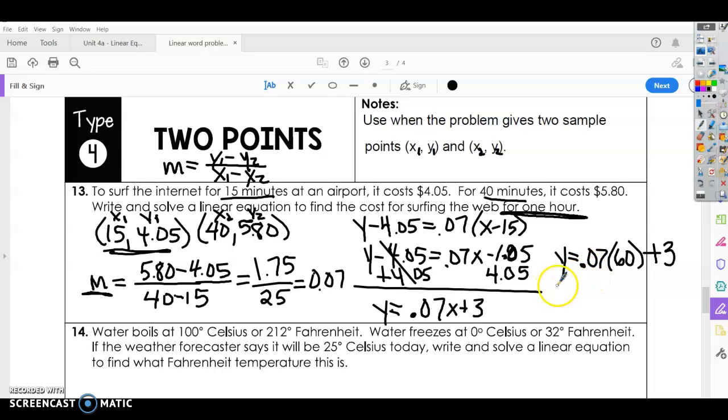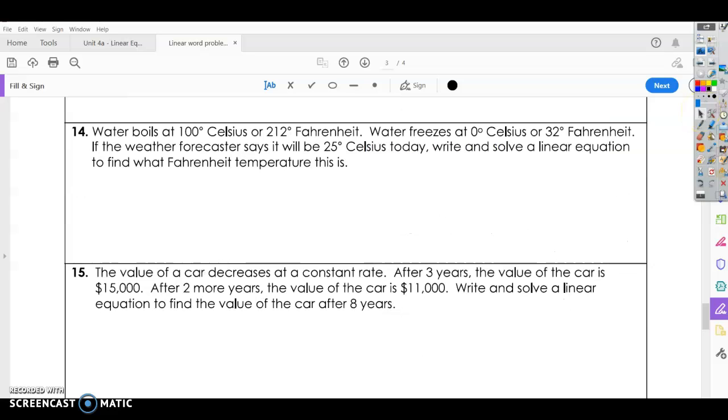Alright, so if I simplify this, plug this in your calculator, you're going to get $7.20. Alright, so to surf the internet at the airport for one hour, it would cost $7.20. Using our equation we found from the two points.